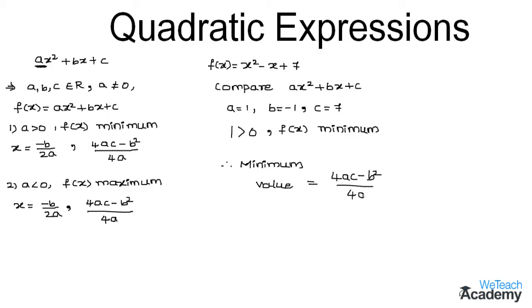On substituting all the values, we get: 4(1)(7) - (1)² divided by 4(1), so we get (28 - 1)/4.